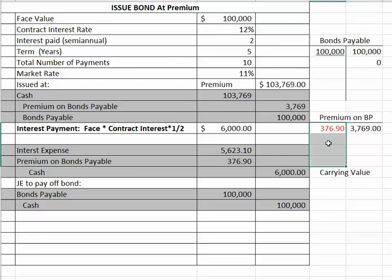Remember, the definition of carrying value is your bonds payable plus the unamortized premium on bonds payable. You'll use that later in the redemption of bonds. Carrying value means you take the liability plus the premium and add those together.